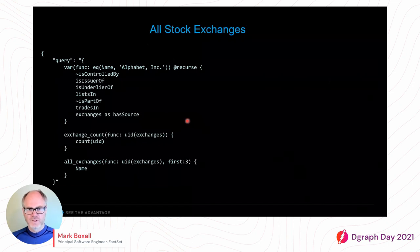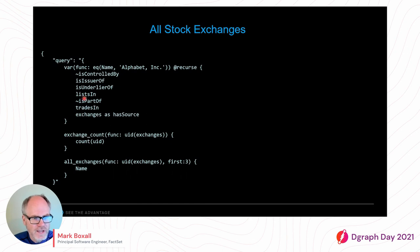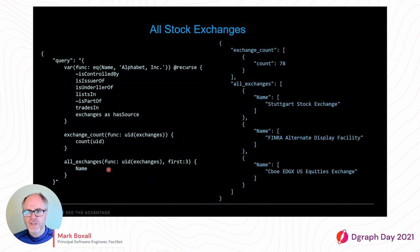Finally in this sequence of slides, which stock exchanges do any of these securities trade on? We've found all the securities and all the derivatives — now we want to see which exchanges across the globe they trade on. To do that, we follow four more edges: 'lists in', 'is part of' in reverse, 'trades in', and 'has source' — where nodes on the other end of 'has source' are the actual stock exchanges. We count them and find 78 unique exchanges that Alphabet trades on.